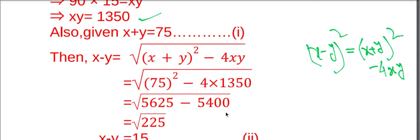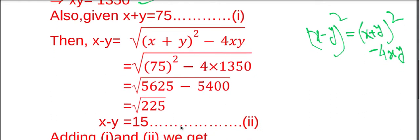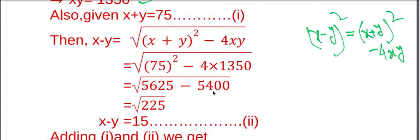So 5625 minus 5400 is 225, so square root of 225 is 15. So X minus Y is 15. We have X plus Y equals 75 and X minus Y is 15.